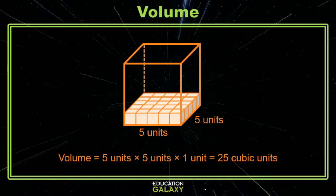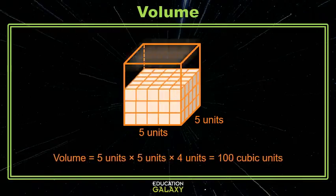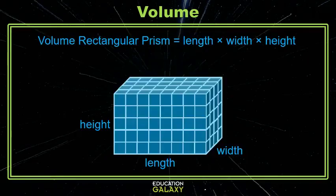Now what if I add another layer? Well, that's just two units, three units, four units. Well, you get the idea. Basically, I'm taking that area of the base and I'm multiplying it by the height. And this works to find the volume of any rectangular prism. We just take the three dimensions and multiply them.